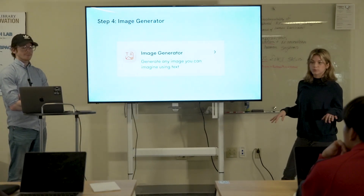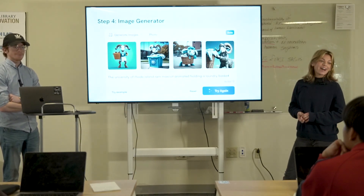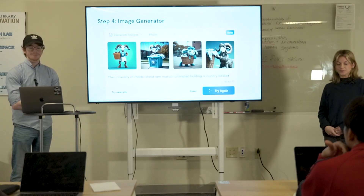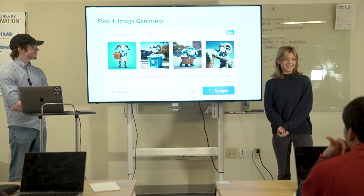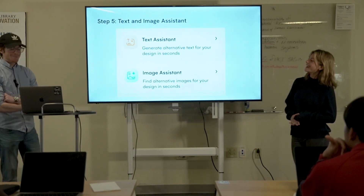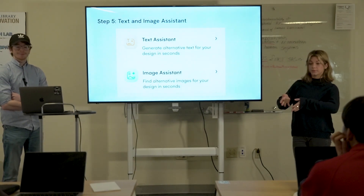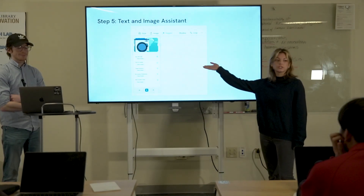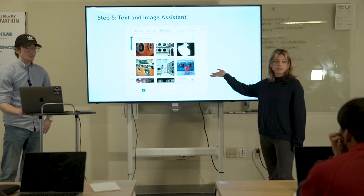The image generator is a text description which generates an image. For my app, because I was trying to customize it to URI, I wanted the RAM to hold a laundry bin. I did not use this, but it's there if you'd like to use it. And then we have the text and image assistant, which lets you select any text or image on your wireframe — for example, taking this image of a washing machine, you can press the suggest button and it will generate a bunch of different options that you can choose from.